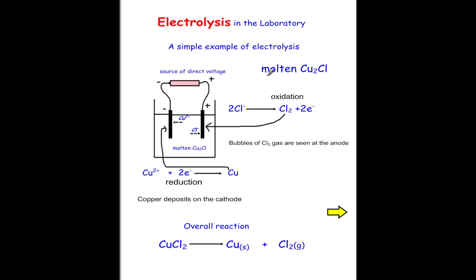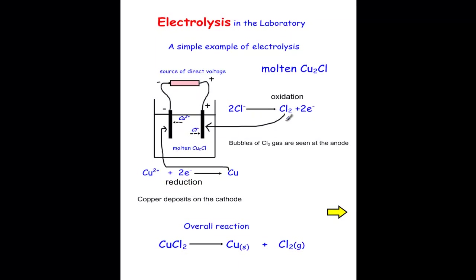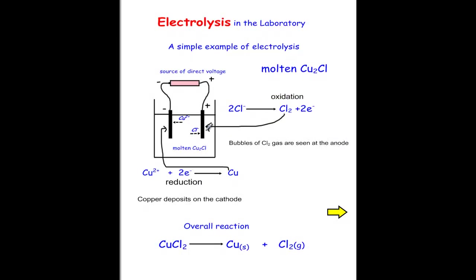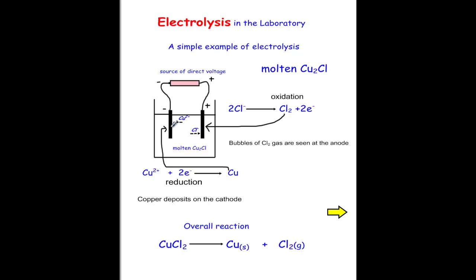Now looking at electrolysis in the laboratory using a molten solution of copper chloride — only copper ions and chloride ions are present. A battery or direct current source is applied, with the negative side feeding electrons in on one side. Copper ions in solution collect two electrons to form copper — that is the reduction process. On the other side oxidation occurs: chloride ions release electrons to form chlorine gas, so we see bubbling on that side and copper being deposited on the other. The black electrodes are inert — platinum or carbon.